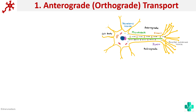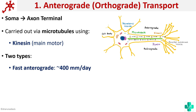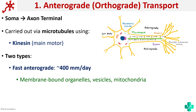Anterograde transport means the movement is from the soma to the axon terminals. It is mainly carried out on microtubules using kinesin as the main motor. Based on speed, we can divide it into two types. Fast anterograde has a speed of around 400 millimeters per day, and membrane-bound organelles, vesicles and mitochondria are transported by this method.